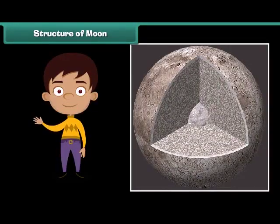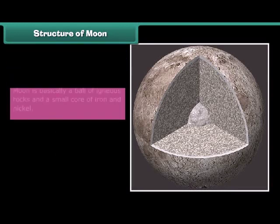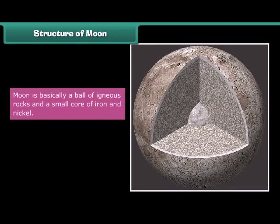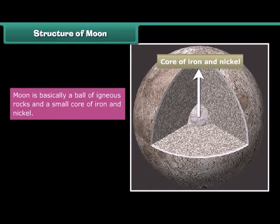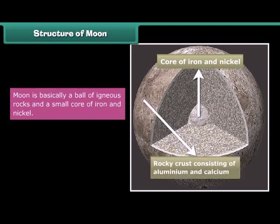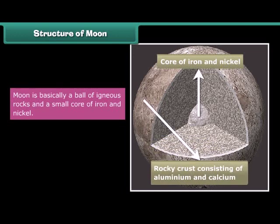Looking at the interior of the moon: the moon is basically a ball of igneous rocks with a small core of iron and nickel, and there is a rocky crust consisting of aluminium and calcium.